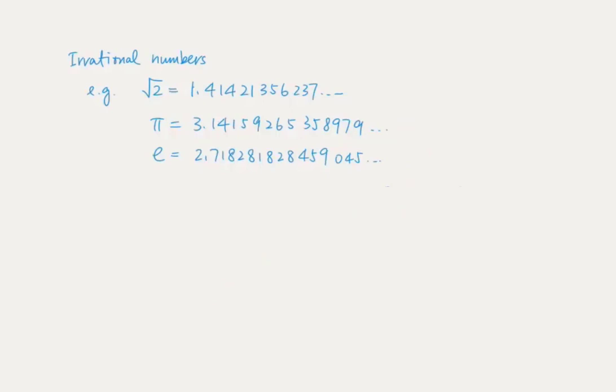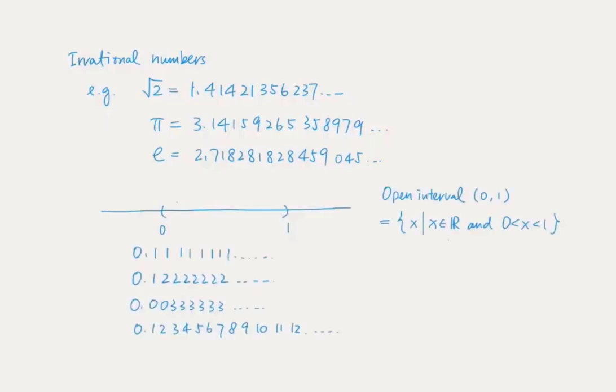Before we show that the set of real numbers is uncountable, let us have some discussion on irrational numbers. There are some well-known irrational numbers such as √2, π, and Euler's number e. We can represent them in decimal expansion — they have infinite decimal expansions with no repeating patterns. In the open interval (0, 1), there are also irrational numbers. Between two irrational numbers, we can always insert another irrational number with a value in between them.